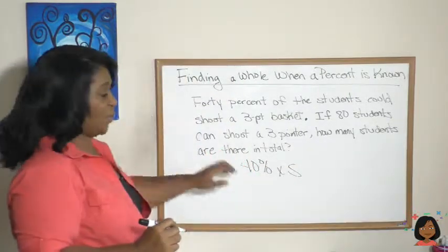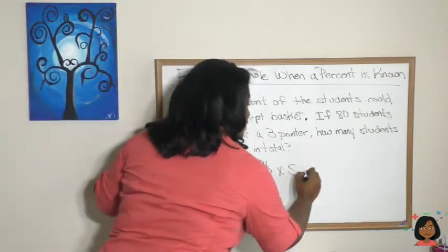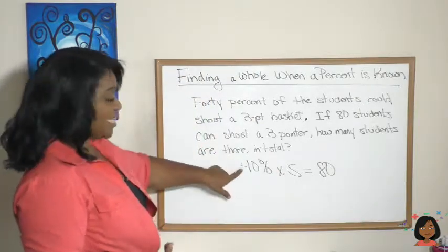So 40%, I'm gonna write 40% of the students. Well, 'of' in math means multiply and I'm going to use s for students. So s of the total students equals 80 students, so there's my 80.